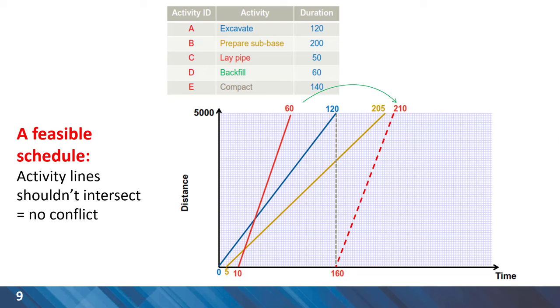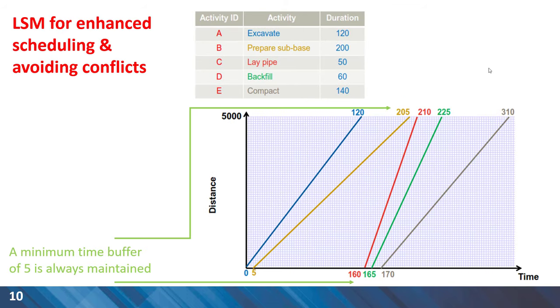With the same principle, we can have the schedule for all five activities. The rule of thumb here is to maintain the minimum buffer of five days at all times. For slower activities with less production rate such as activity B, considering the buffer for the start time is appropriate. However, for fast activities with higher production rate such as activity C, we need to consider the buffer for finish time.